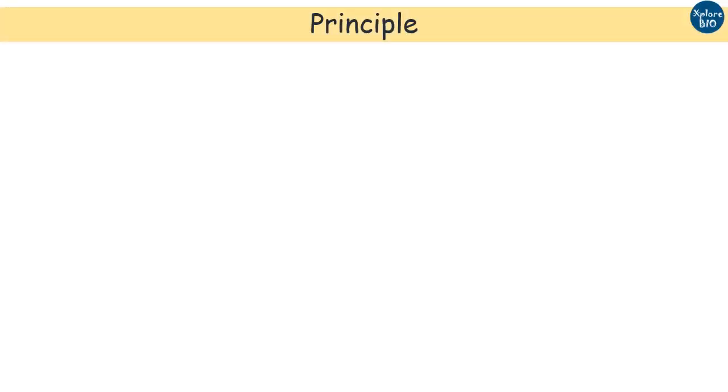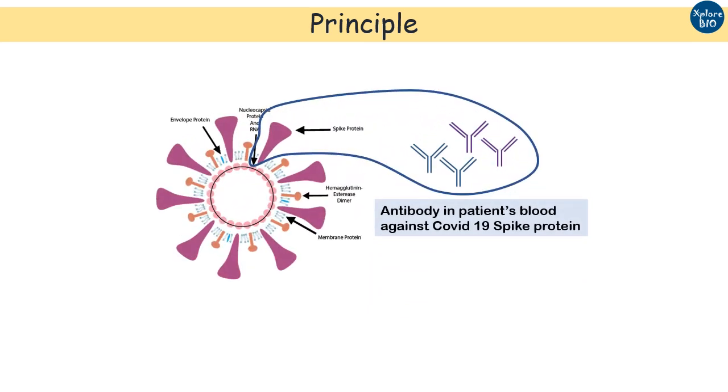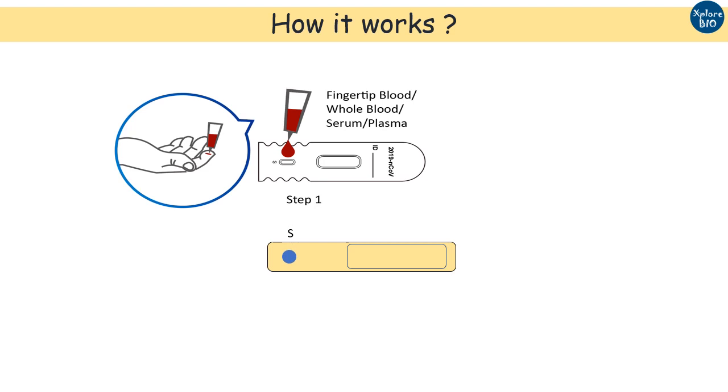It is based on the principle of detection of antibodies against COVID-19 virus in the patient's blood. Now coming on to how it works. The chip comprises of a sample well where the blood sample is loaded. This is followed by a conjugation pad which contains the COVID-19 antigen coated gold particles.